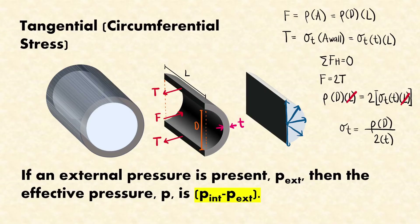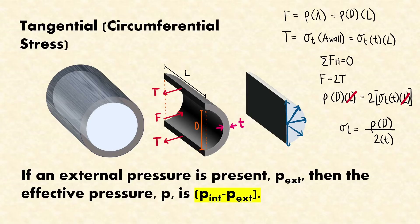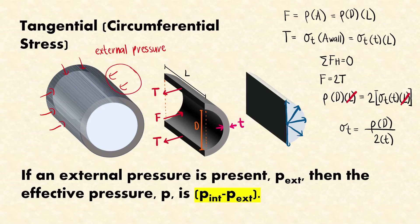If an external pressure is present, the P we'll use is the effective pressure, which is the internal pressure minus the external pressure. If we have an external pressure acting at the side of the tank, it helps compress the tank and adds resistance to bursting. That's why the effective pressure is reduced — we subtract the external pressure because of this added resistance.